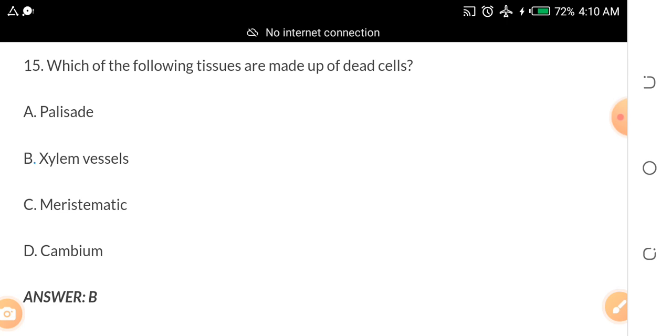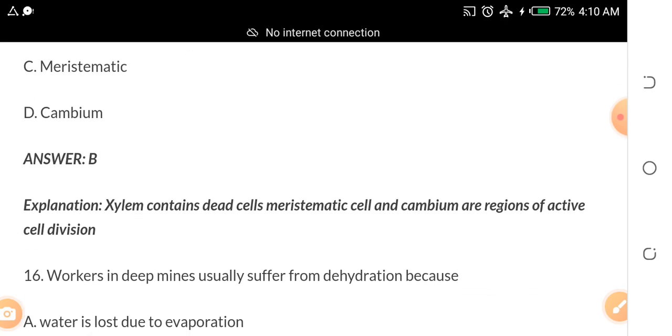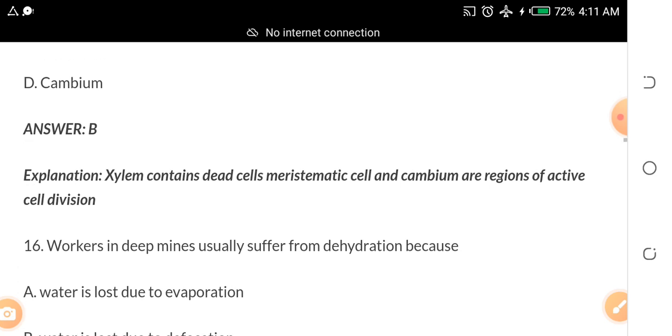The answer is B, Xylem Cells. Xylem Cells contain dead cells. Meristematic Cells and Cambium are regions of active cell division. So the answer is Xylem Cells.